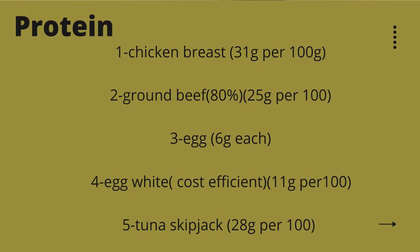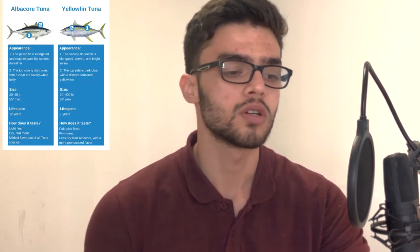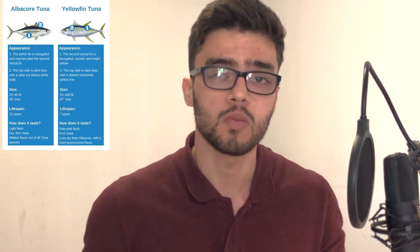Now let's go through the list of items you need for a clean bulk. Starting with protein: you need chicken breast and ground beef — try to go with 80% lean ground beef. You also need eggs and egg whites, which come separately in a container. Egg whites are cost-efficient, low in calories, and high in protein. You also need tuna — specifically skipjack tuna, because skipjack is a smaller fish that contains lower levels of mercury, which can otherwise lead to poisoning.